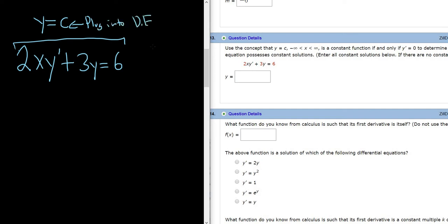So if y is equal to c, the derivative of c is 0 because the derivative of a constant is 0. That's all it's saying here in the problem. So now you just plug everything in.